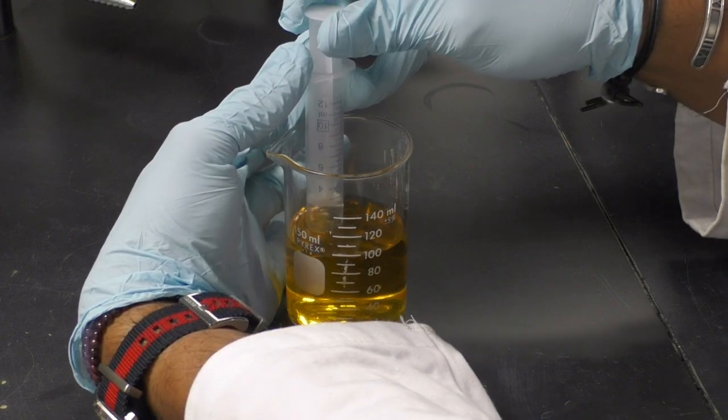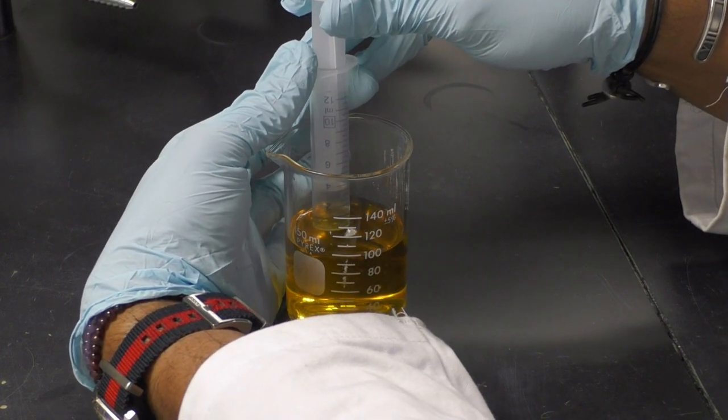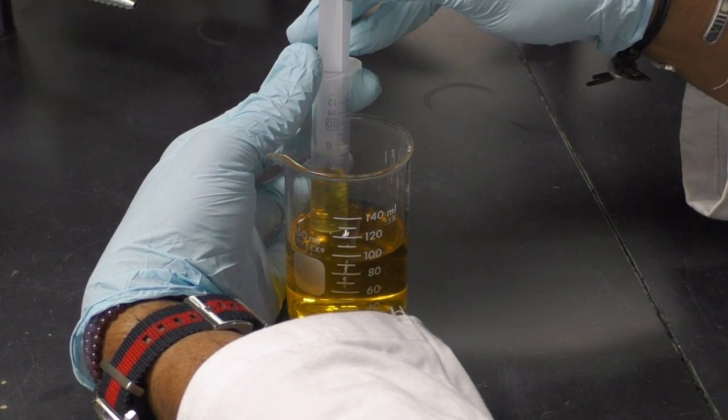This will help you avoid drawing up air bubbles. Slowly pull upwards on the plunger to pull your sample into the syringe.